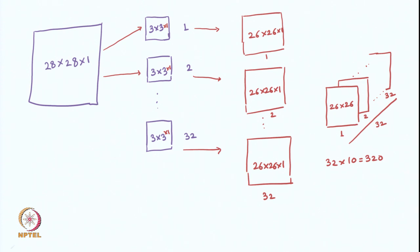If we want the convolution output to have the same shape as the input, we use padding. After applying convolution, the input gets shrunk by some amount. If we do not want our input to shrink, we use padding, where we add some dummy columns and rows to the input and then apply convolution on it. For a convolution with a filter of size 3x3, we add one dummy row and one dummy column to the left, right, top, and bottom. This ensures the output shape is the same as the input shape.